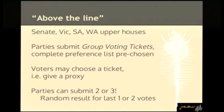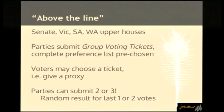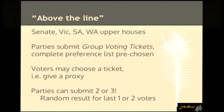What makes it even more interesting is that parties can submit two or even three different tickets. If you vote above the line for that party, their votes are divided up half and half, or one-third each. If a party has received, say, a million above-the-line votes and there's an odd vote left over, the Electoral Commission literally generates a random number — they roll a die to determine where that last vote goes. I'm personally uncomfortable about that being part of how we count votes in our electoral system.